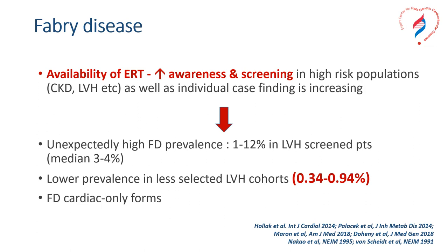It was the availability of enzyme replacement therapy that led to increased awareness and screening in high risk populations, like those with chronic kidney disease or left ventricular hypertrophy. When first studied in selected populations screened in tertiary centers, there was an unexpectedly high Fabry disease prevalence described in 1 to 12% of patients, with a median of 3–4%. However, from large cohorts of less selected patients with LVH, the prevalence is much lower, between 0.3% and 0.9%.